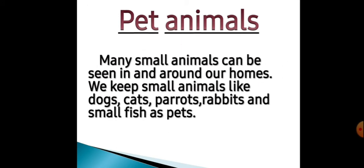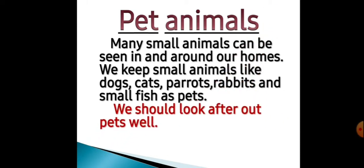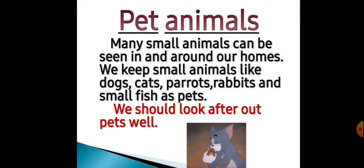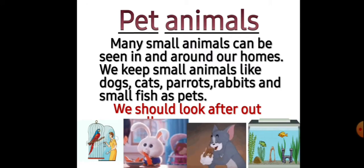Pet animals. Many small animals can be seen in and around our homes. We keep small animals like dogs, cats, parrots, rabbits and small fishes as pets. Hamare ghar ke aaspaas hum chote chote animals dekhte hain. Un mein se dogs, cats, parrots, rabbits aur small fishes unko hum apne ghar pe as a pet animal rakh sakte hain. We should look after our pets well. Agar hum unko pet bana ke laate hain, to hum ko unka achhe se khayal rakhna hai.